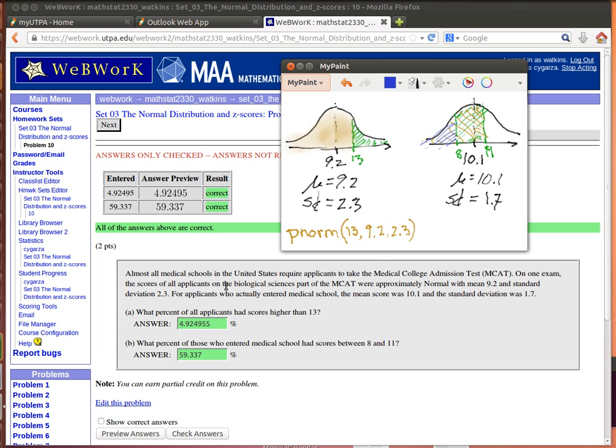We've got two populations here. One is the population of all applicants who are taking an MCAT exam. We know that population is approximately normally distributed with a mean of 9.3, so there's the mean of 9.3 and a standard deviation of 2.3. The second population are those who get accepted to the medical school. The mean of that population is 10.1 with a standard deviation of 1.7.